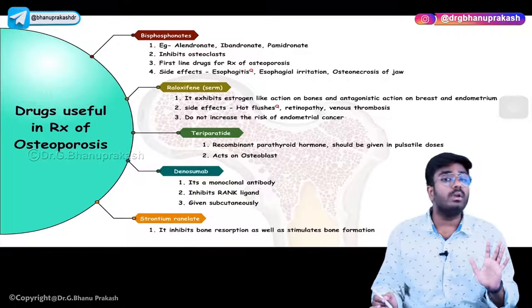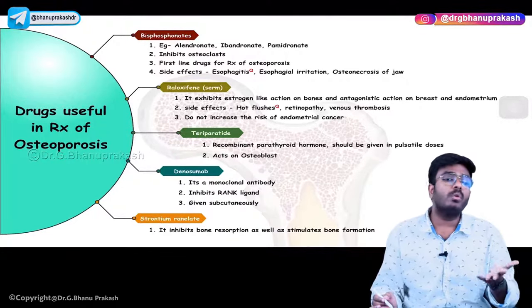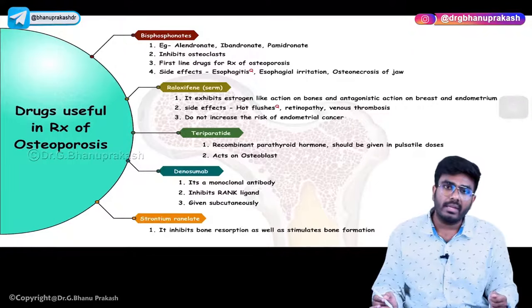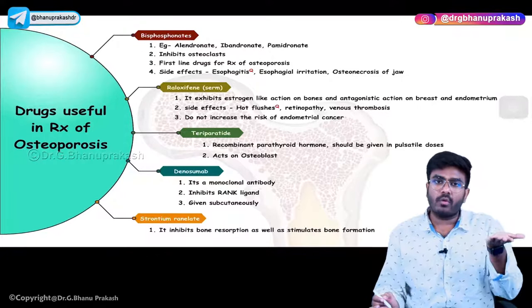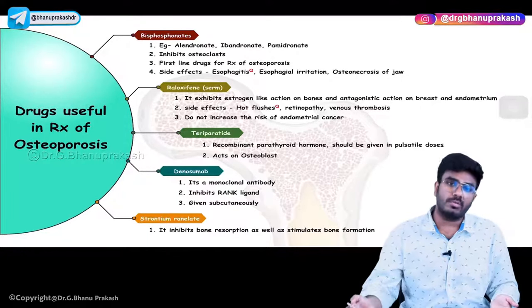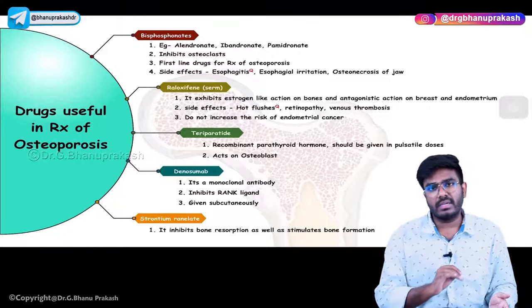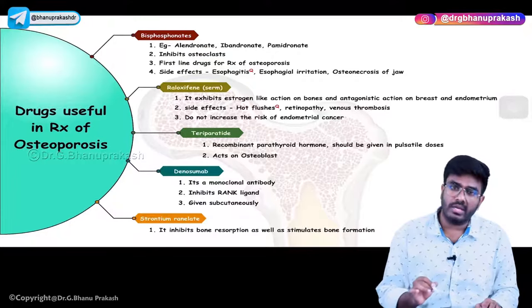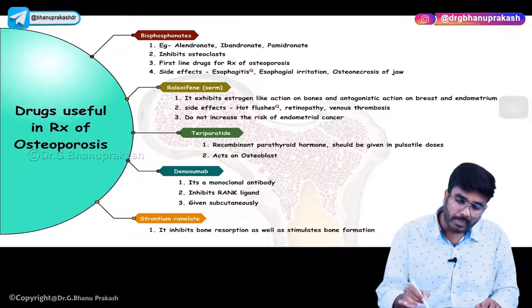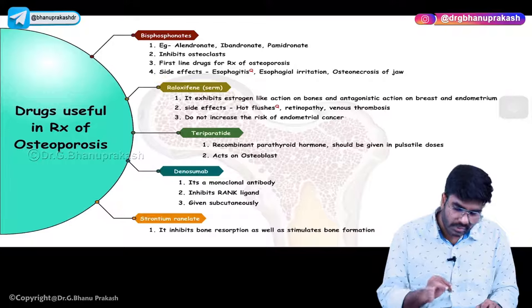Since osteoclasts are the bone-resorbing cells, removing osteoclasts stops bone resorption, treating osteoporosis. To treat osteoporosis, you either increase bone formation or decrease bone resorption. Bisphosphonates are the drug of choice — alendronate, ibandronate, pamidronate, zoledronate — all work by inhibiting osteoclasts.